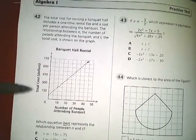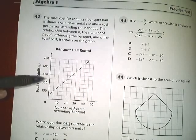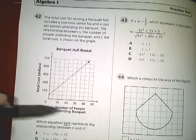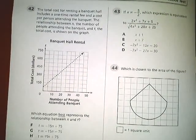You should probably notice that this total cost is over here in dollars. So if it says $450, it actually is $450. And the number of people attending the banquet. They want to know which equation best represents the relationship between n and t.